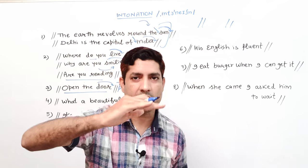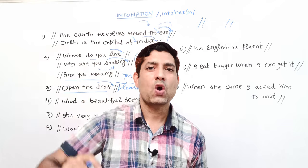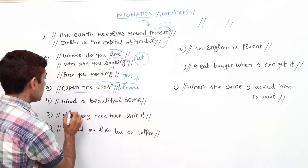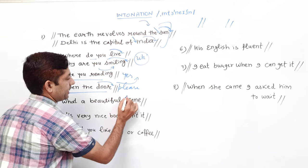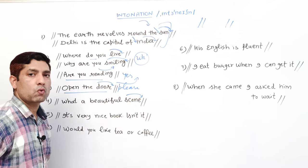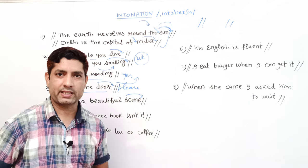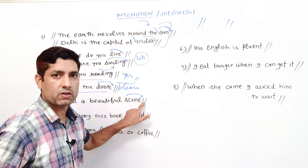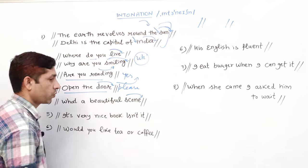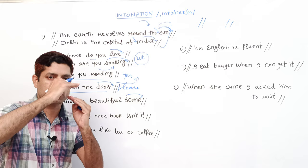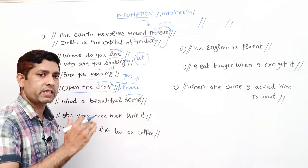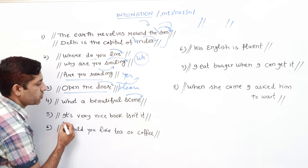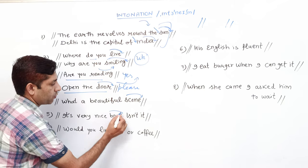लेकिन यदि request का भाव हो, जैसे 'Open the door, please' — तो rising tone हो जाएगी। Exclamatory sentences में falling tone रहती है: 'What a beautiful scene!' — falling। Falling का मतलब pitch नीचे आए, rising का मतलब pitch ऊपर जाए।